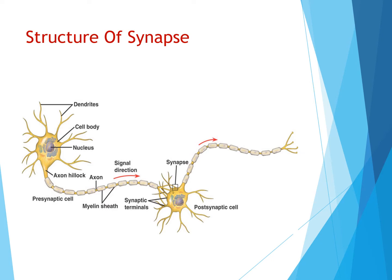The part before the synapse is called presynaptic, and the part after the synapse is called postsynaptic. Impulses are always carried in one single direction — from the first cell through the axon, transmitted to the second cell through the synapse.